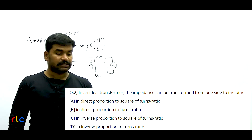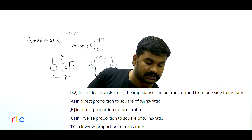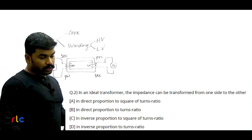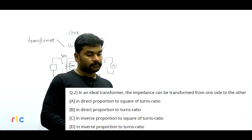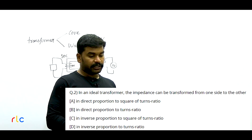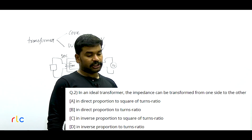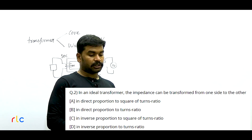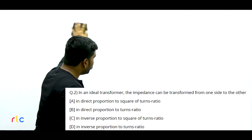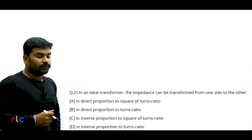Next question: In an ideal transformer, impedance can be transformed from one side to the other — Option A: in direct proportion to the square of turns ratio; Option B: in direct proportion to turns ratio; Option C: in inverse proportion to square of turns ratio; Option D: in inverse proportion to turns ratio. This question is a little tricky because of the way it is asked.